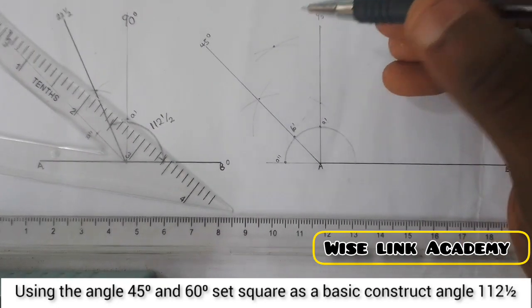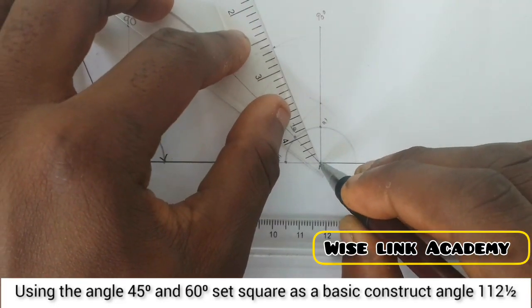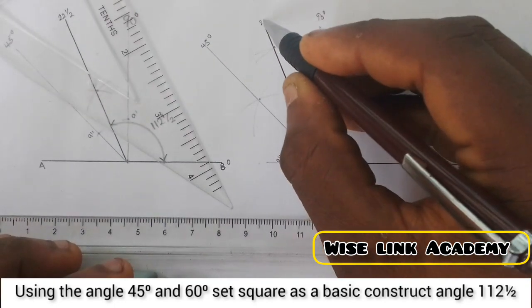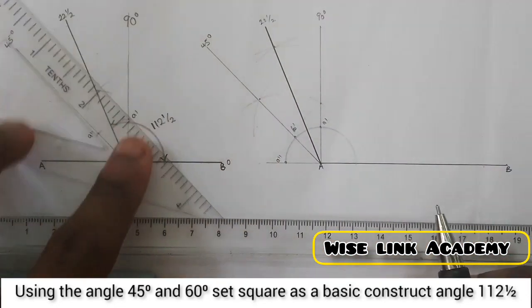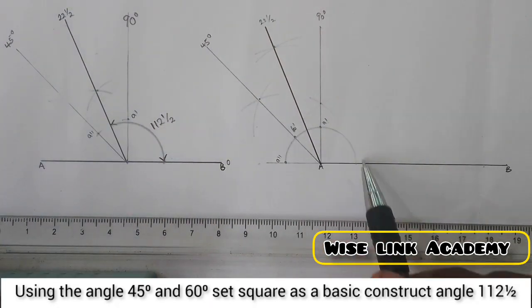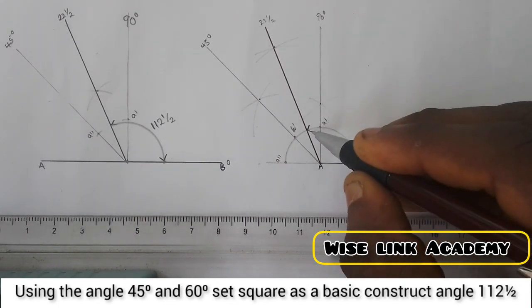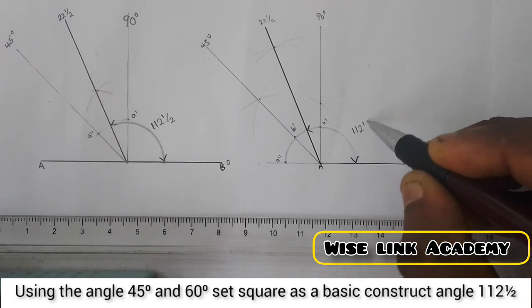At this point here, I will draw a thick line. Here is 22.5. So it simply means the angle from this point here down here, from this point here to this point here is given to be angle 112 and a half.